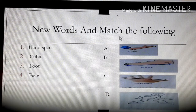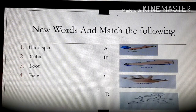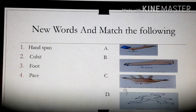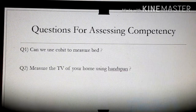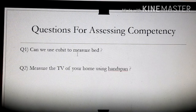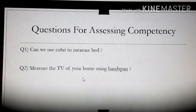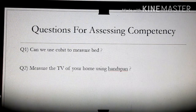Now let's do the new words and match the following. Write down these new words in your copy and look at the questions on screen — match hand span, cubit, foot, and pace with the correct pictures. Also think: can we use a cubit to measure a bed? Activity two: measure the TV at your home using hand span and find the length of the screen. That's all for today — thank you so much!